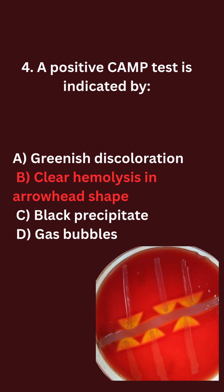A positive CAMP test is indicated by: A. Greenish discoloration. B. Clear hemolysis in arrowhead shape. C. Black precipitate. D. Gas bubbles.